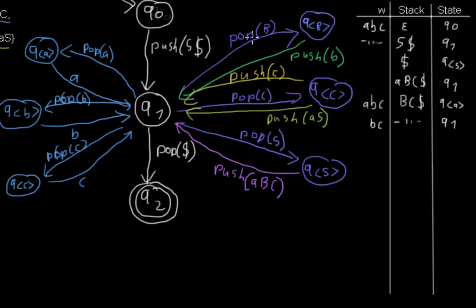Now we pop the b from the input string following this transition going to qb. Then we follow this transition pushing b onto the stack. So now we have bc dollar on the stack. We are back in q1.